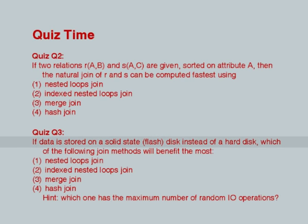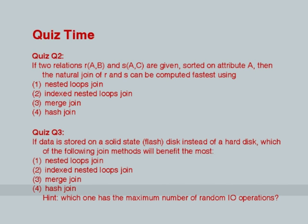The second question: if data is stored on a solid state flash disk instead of a hard disk, which join method will benefit the most? Options: nested loops, index nested loops, merge, and hash. The hint is that the difference between a solid state disk and a regular hard disk is that the cost of random IO is much lower on a solid state disk — sequential IO is not much different. The question is which algorithm has the maximum amount of random IO operations that will benefit from a flash disk.